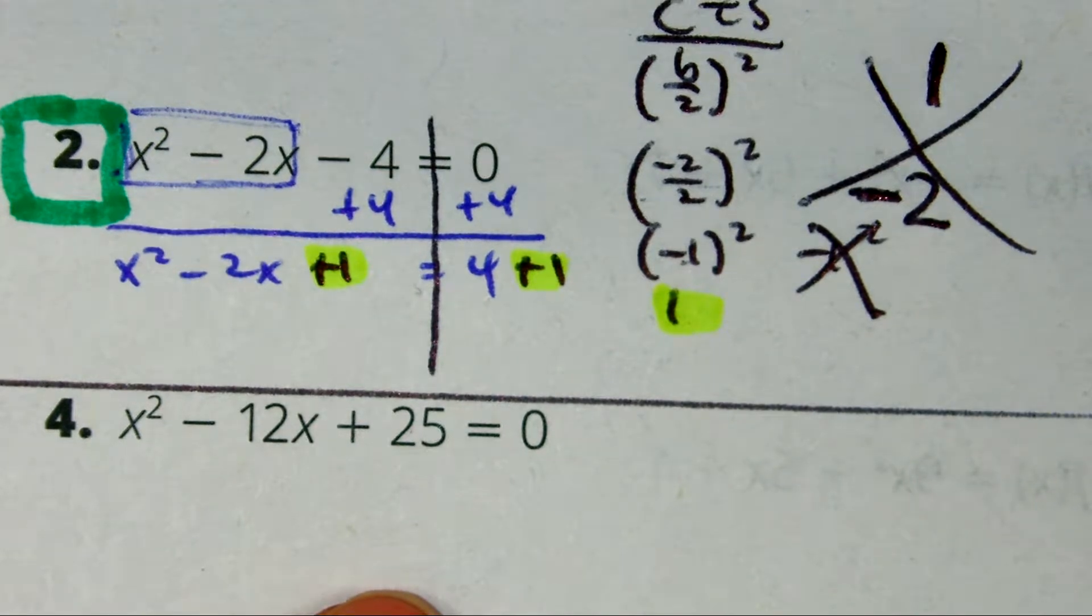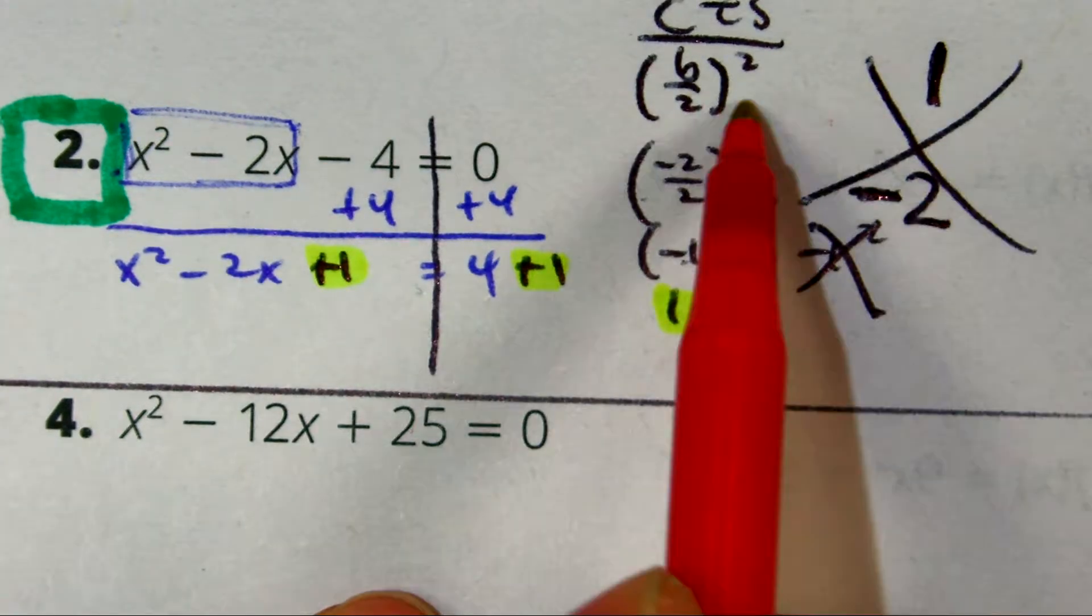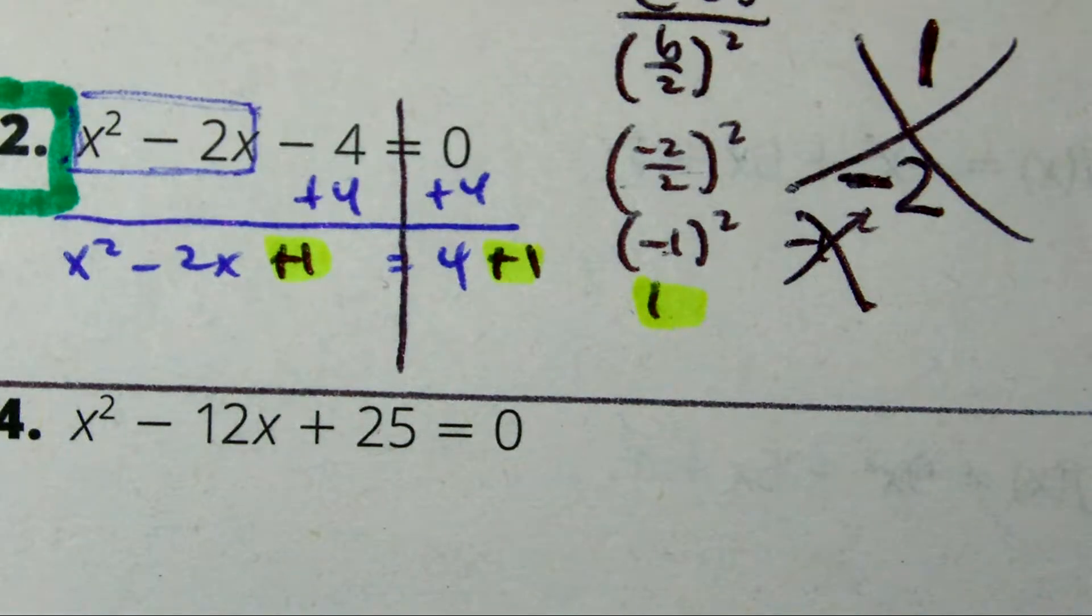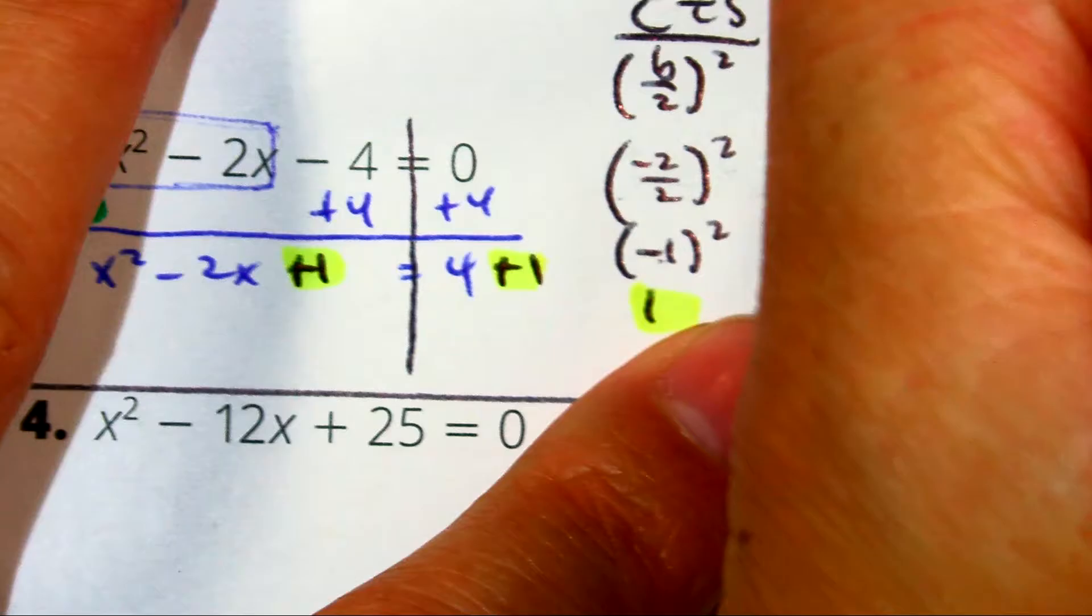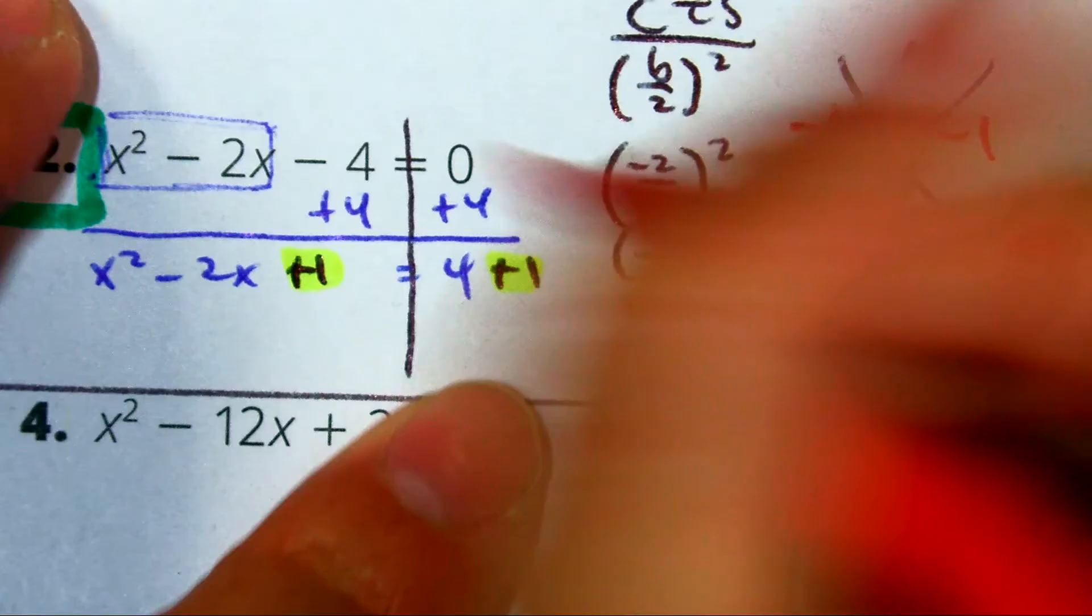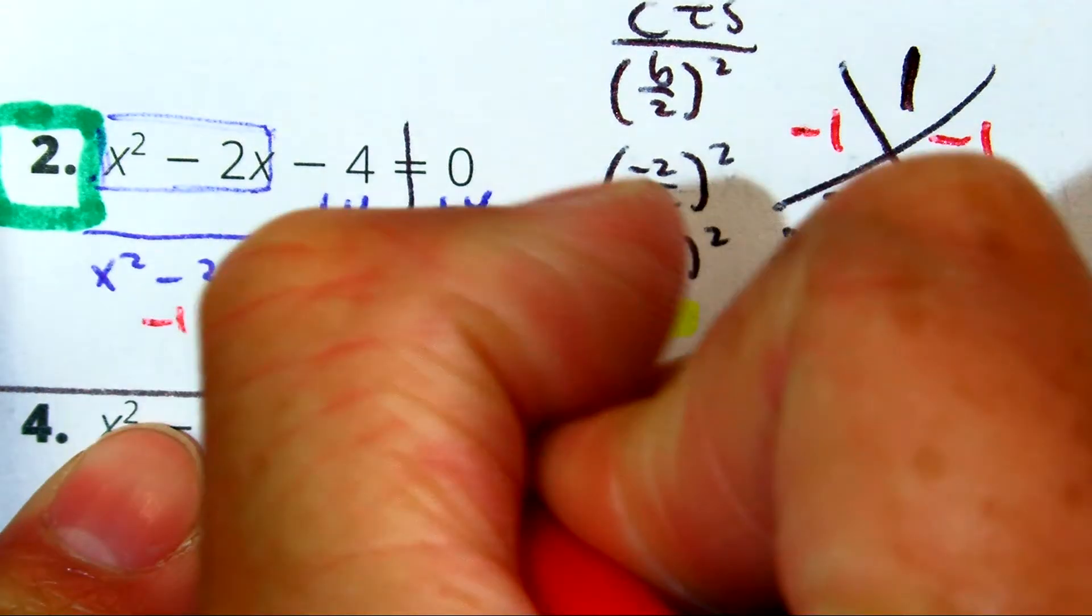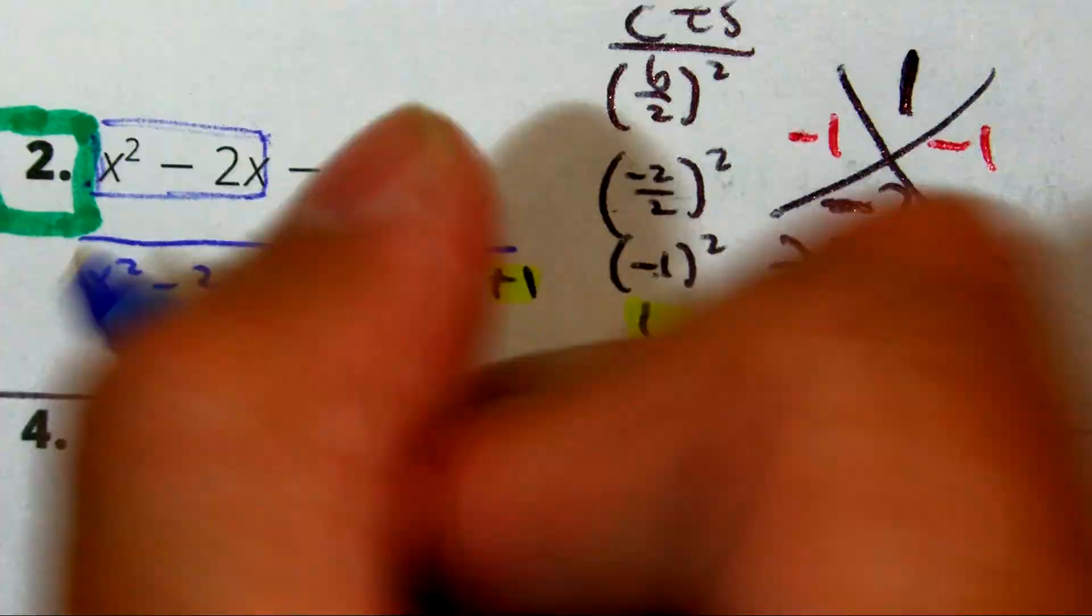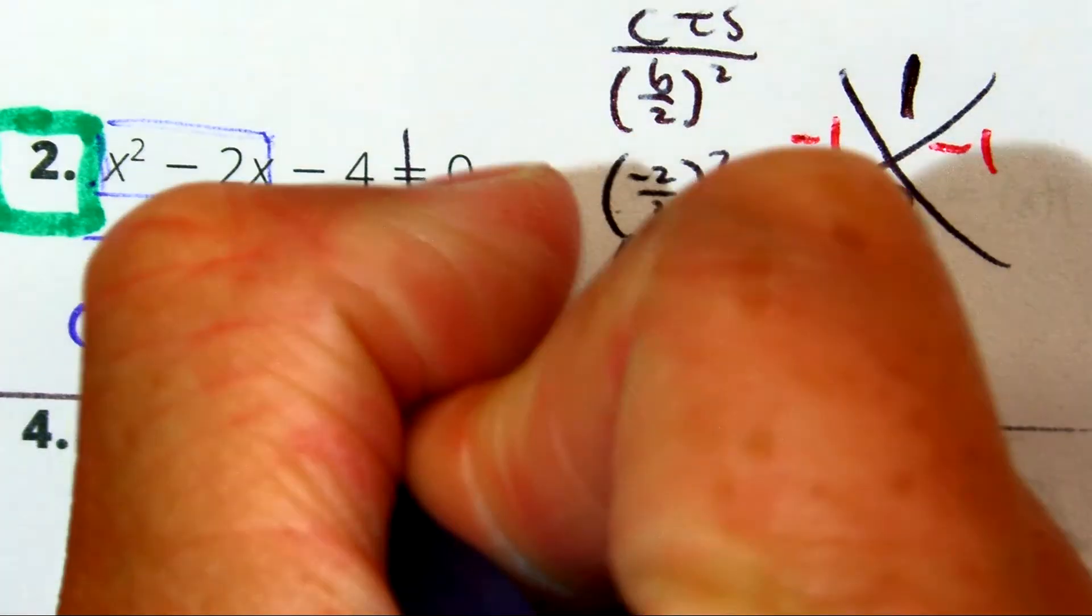I'll give you a hint. These are going to be the same numbers. So, that will give us x minus 1 and x minus 1.